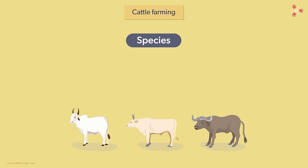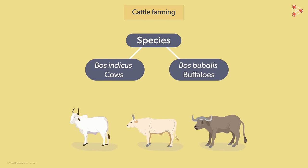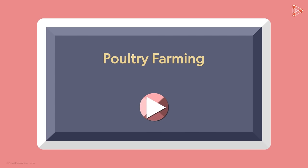There are two species of cattle most commonly used. Their scientific names are Bos indicus cows and Bos indicus buffaloes, though we can always refer to them simply as cattle, cows, and buffaloes. In our next video, we will look at the idea of poultry farming, an industry which is catching up faster than we know.